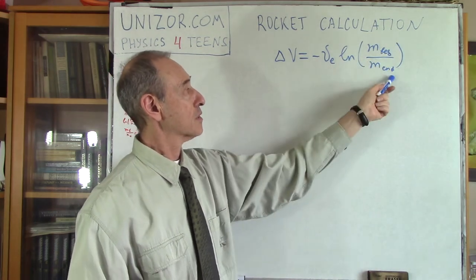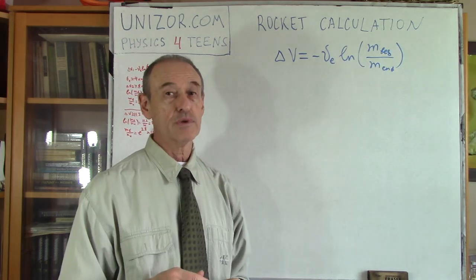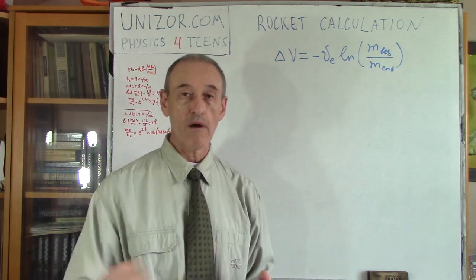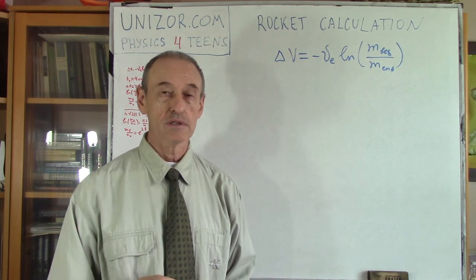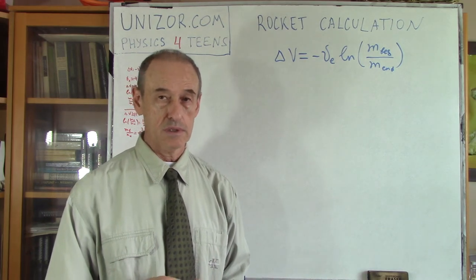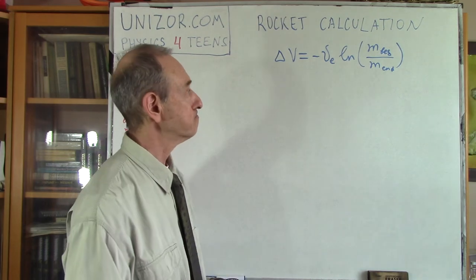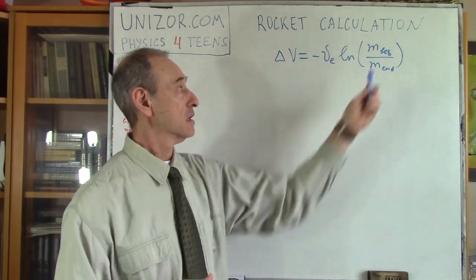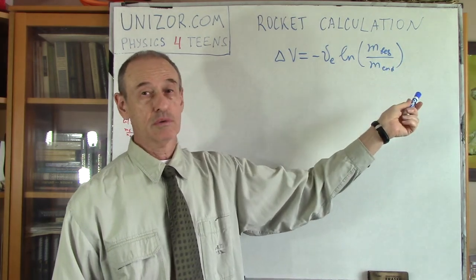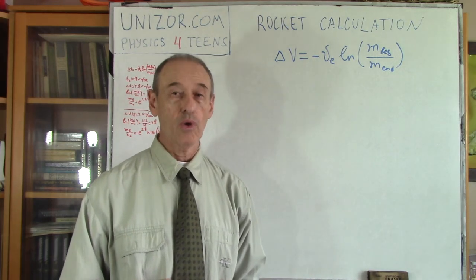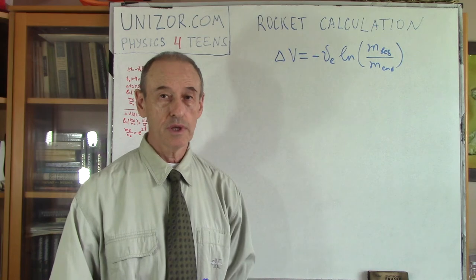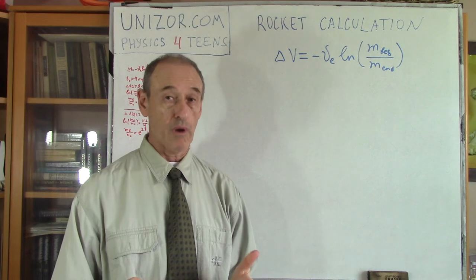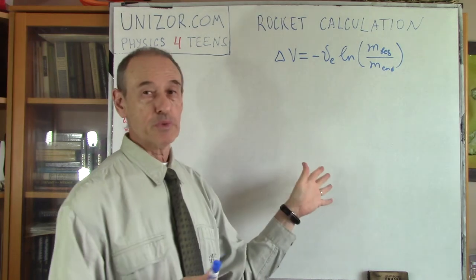And this is the logarithm of the ratio of the mass of the rocket in the beginning and at the end of certain time period during which the rocket exhausts its fuel, its propellant. And I was telling you that I was a little bit surprised. I was surprised of this ratio. Apparently, we need a lot of fuel, a lot of propellant to launch our rocket to an orbit.